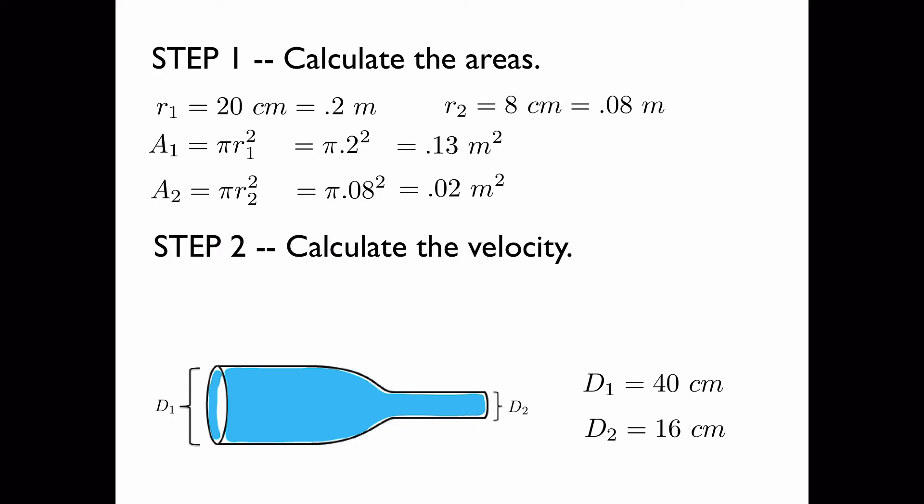From this we can calculate the velocity. The product of the area and the velocity is always constant for an incompressible fluid like water.